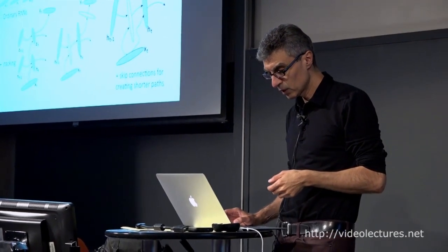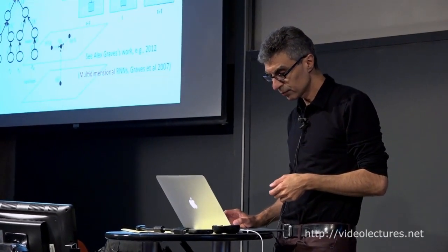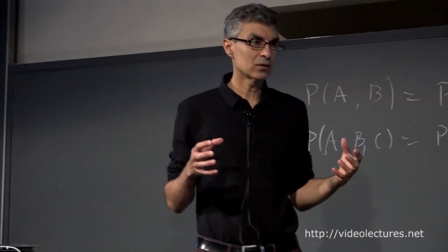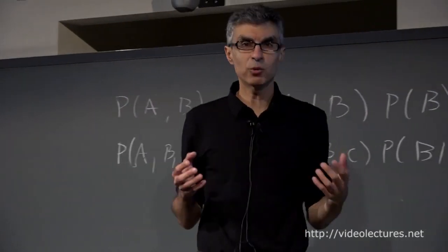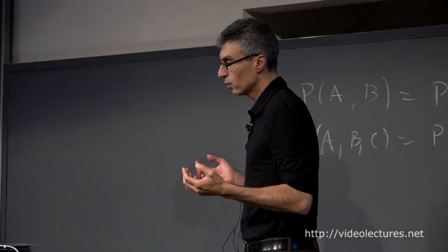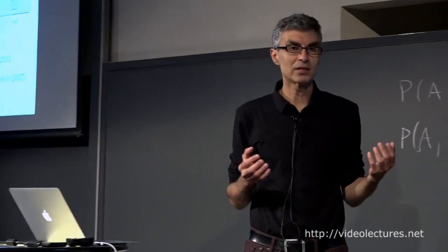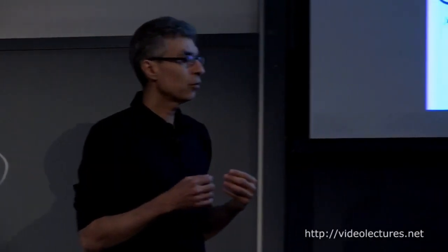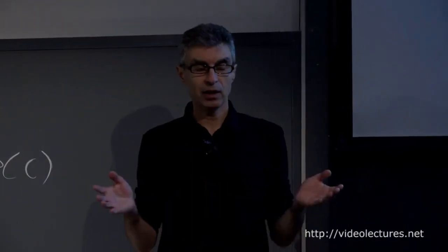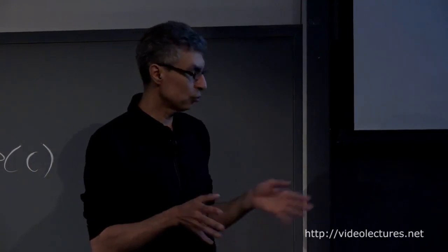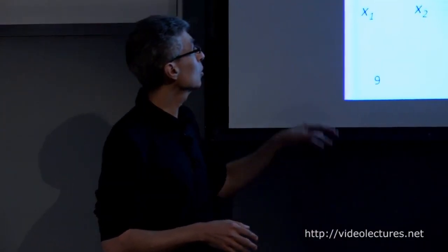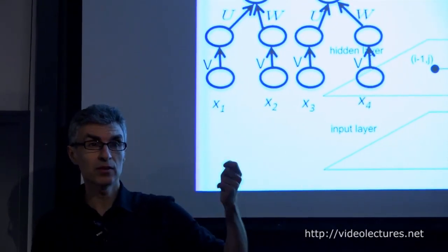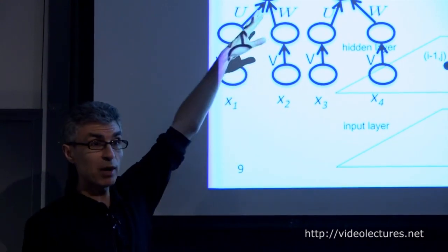Once you understand dealing with variable-size structures like sequences, it's very easy to extend to other data structures. The first of those we studied in the 90s is tree structures. Instead of recursing once, you can have a state that depends on two states rather than just one previous state — so the unfolded graph is a tree. Another example is a grid where the i,j node depends on the neighbor to the left and the neighbor to the north as inputs — that's multi-dimensional recurrent nets.